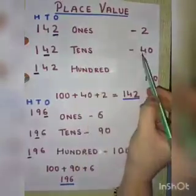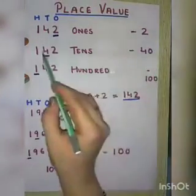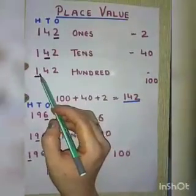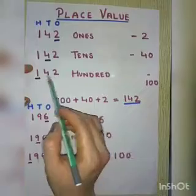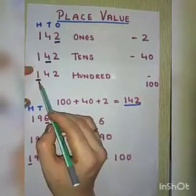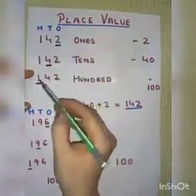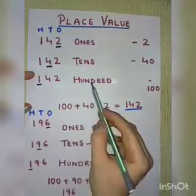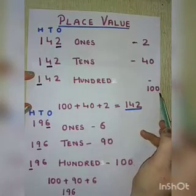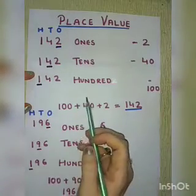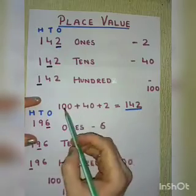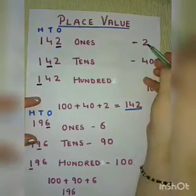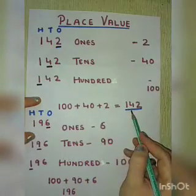The place value of 4 is 10's, and we are writing it as 40. 4 tens means 40. And here in the next 142, the line is drawn below 1, and it is at 100's place. So it is 100. Place value of 1 is 100. And if we are going to do the expanded form of this, we write 100 plus 40 plus 2, which is equal to 142.